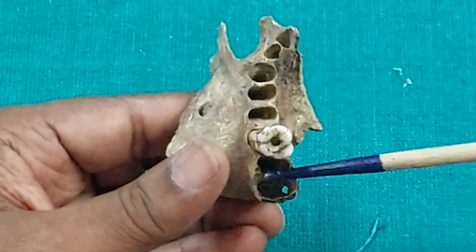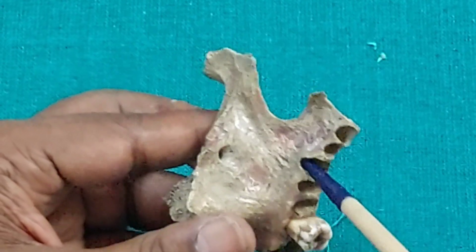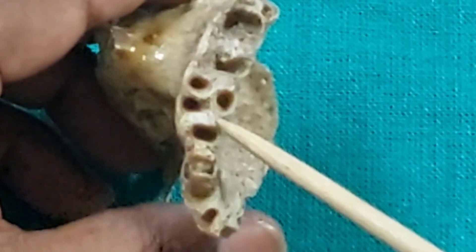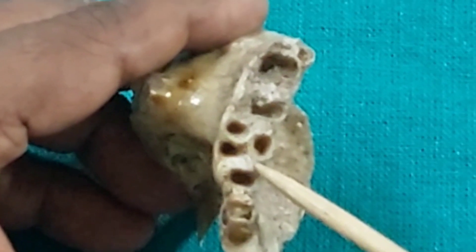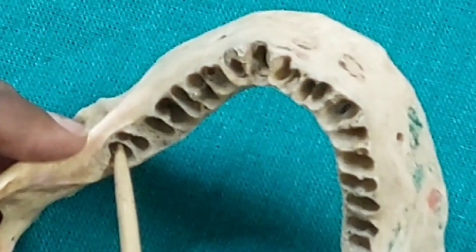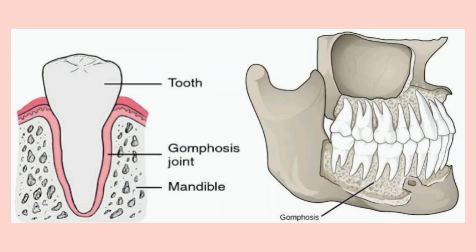The alveolar process contains sockets for the teeth of the upper jaw; the deepest socket is for the canine and the widest socket is for the molars. The sockets for the molars of the upper jaw are divided into three compartments to house three roots of each molar tooth, while the sockets of the lower jaw molars are divided into two compartments for two roots. The joint between the tooth root and the socket is called gomphosis, a type of fibrous joint.